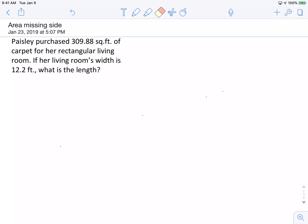Paisley purchased 309.88 square feet of carpet for a rectangular living room. If the living room's width is 12.2 feet, what is the length? I can already tell by looking at this, just by seeing square feet, that we're talking about area. The fact that she's filling her living room with carpet also tells me that I'm correct and that we're dealing with area. And remember, the formula for area is length times width.